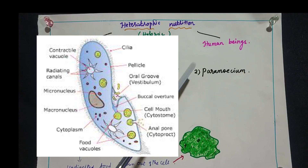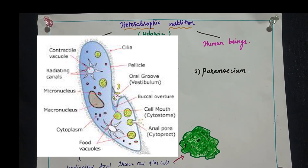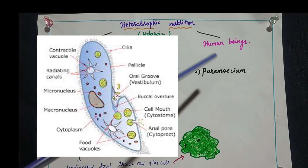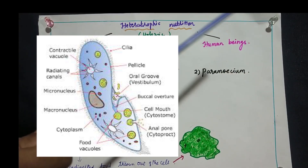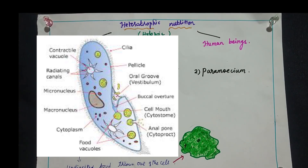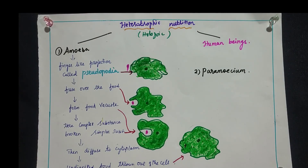Paramecium is another unicellular organism that has cilia all over its body. It also engulfs food, ingests it, digests it, and finally throws out the unwanted particles out of the cell. The next detailed discussion is about human beings — how they digest food and how food enters the human body in a stepwise process.